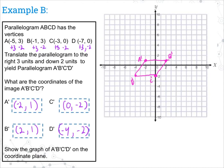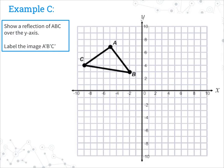Now let's move on to example C. It says show a reflection of triangle ABC over the y-axis and label the image A prime, B prime, C prime. So we're going to be performing a reflection — another way to think of that is a flip — over the y-axis. It's very helpful to draw a dashed line down the y-axis so you remember that's the one you're going over. Reflecting from one side to the other: A is five spaces to the left, so to reflect over the y-axis I go five spaces to the right and get A prime. B is two places to the left, so I go two places to the right — that's B prime.